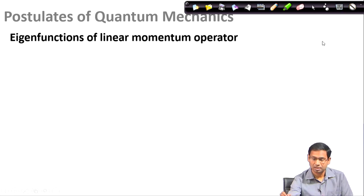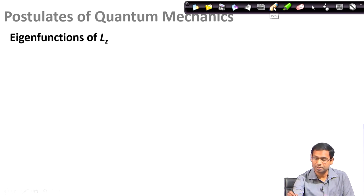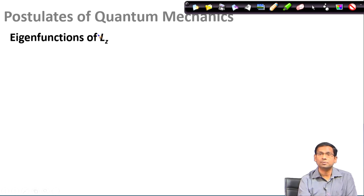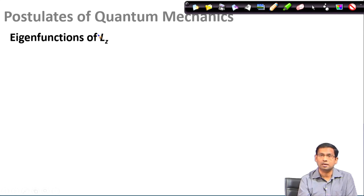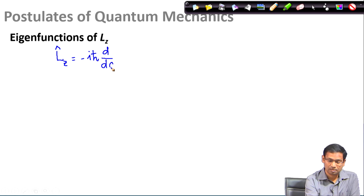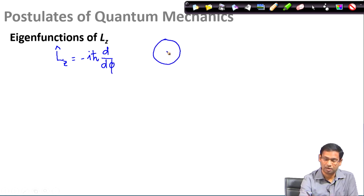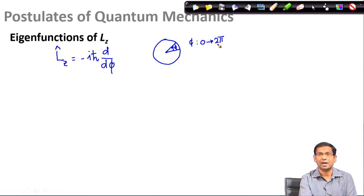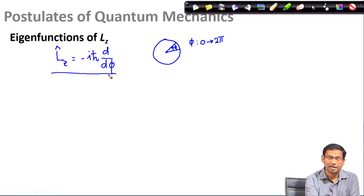You can imagine a particle going in a circular path where phi is the angle. Here phi goes from 0 to 2 pi, unlike linear momentum where x went from minus infinity to plus infinity. The task at hand is to find the eigenfunction of this operator. I start with the premise that let psi be the eigenfunction of the L_z operator with eigenvalue a — a constant — and I should get back the function itself since it is supposed to be an eigenfunction of L_z. I substitute the functional form of L_z and do the same exercise as for the linear momentum operator — collecting the psi terms on one side and integrating both sides.